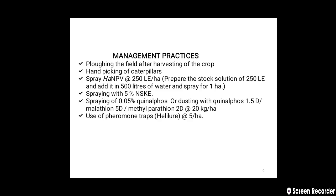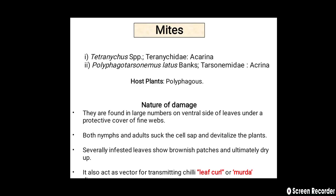The third major pest of chili is mites. Two species attack chili: Tetranychus species and Polyphagotarsonemus latus. Both species of mites belong to class Acarina. This is also a polyphagous pest.